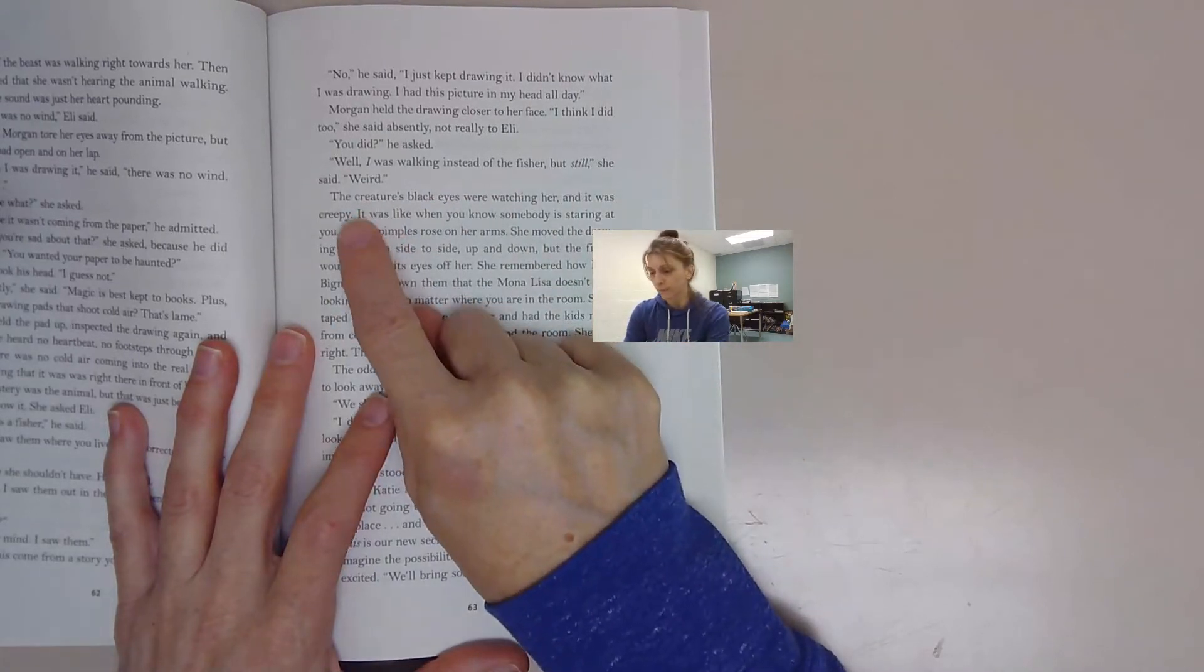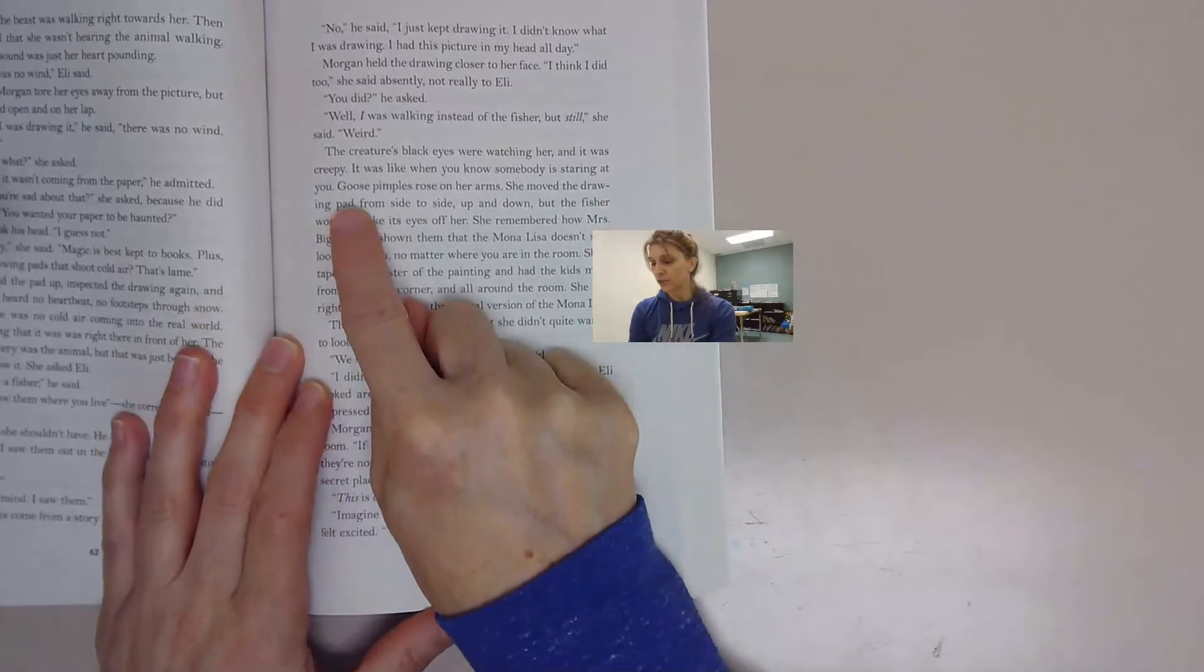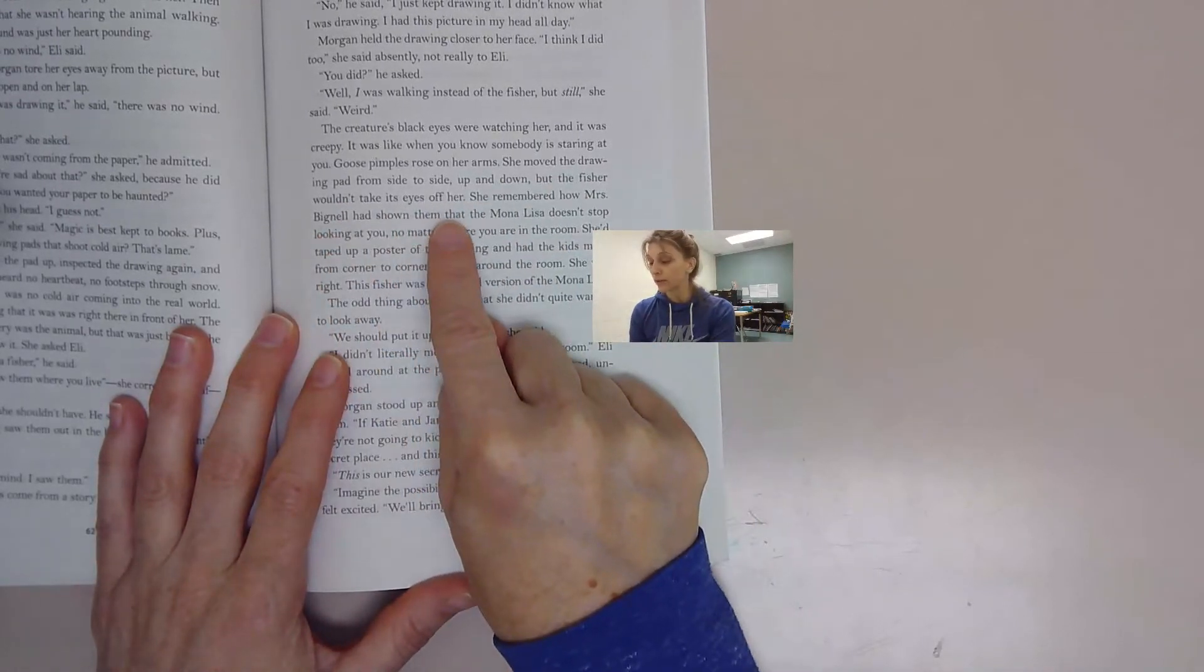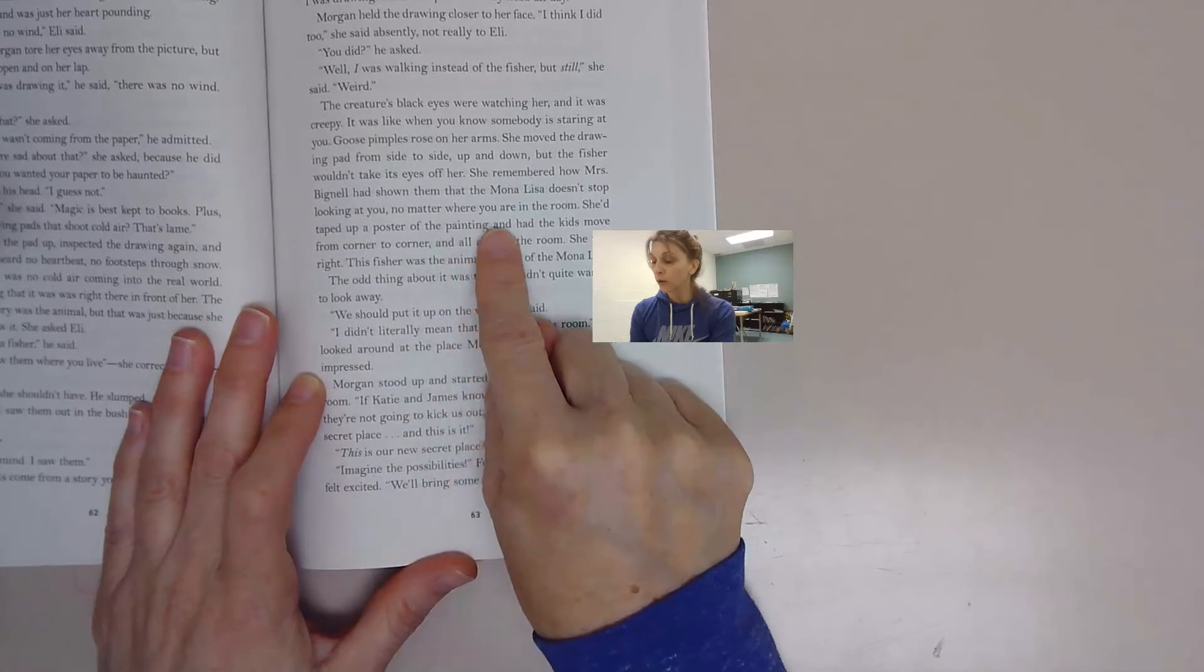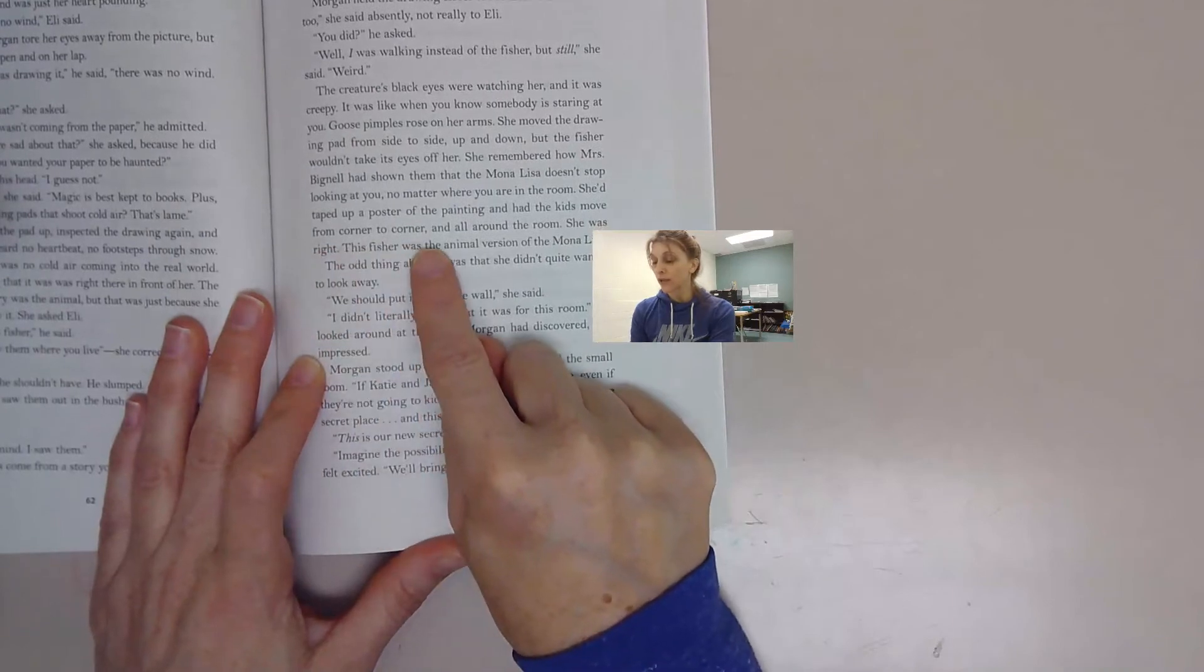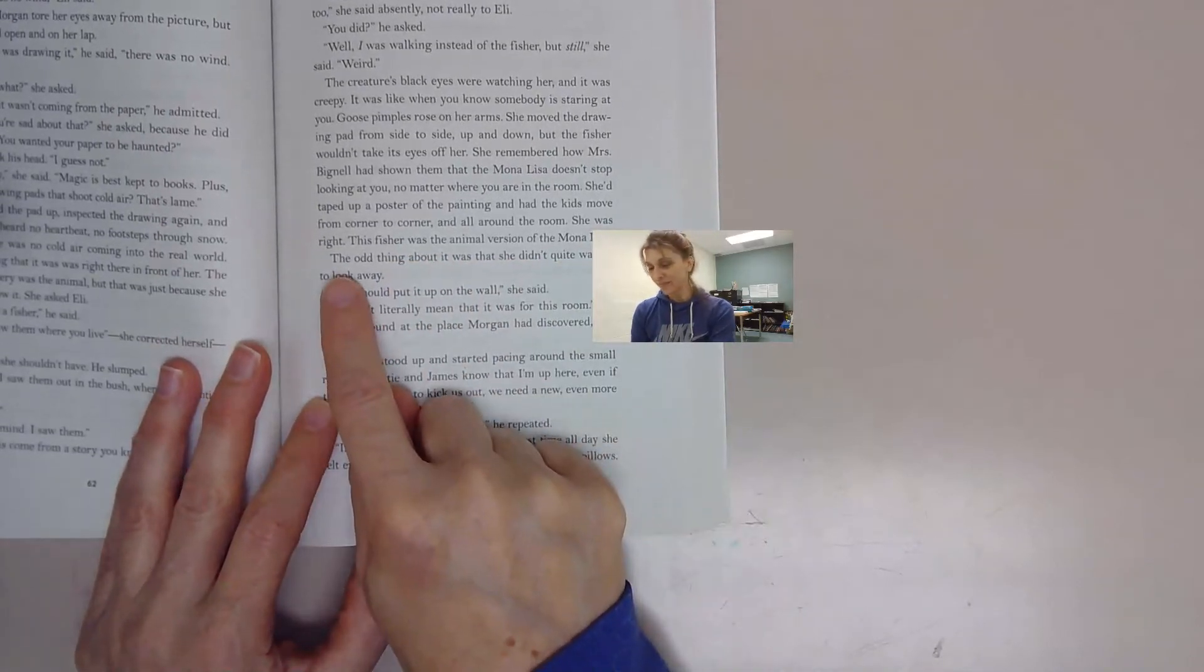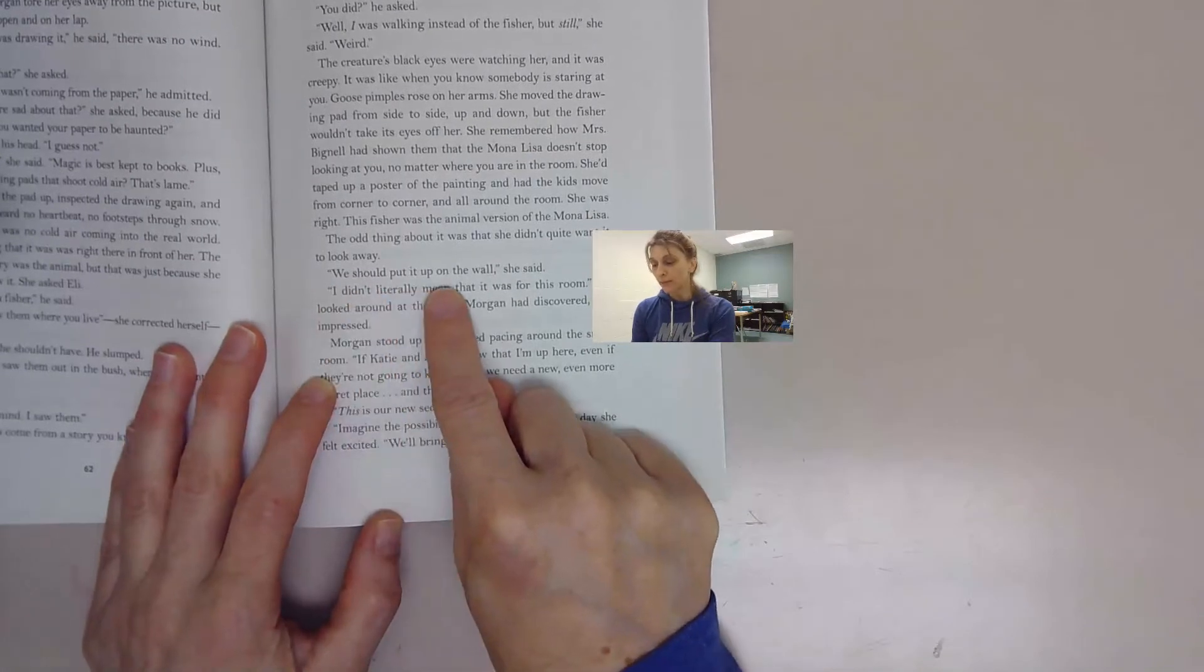Morgan held the drawing closer to her face. I think I did too, she said absently, not really to Eli. You did, he asked. Well I was walking instead of the fisher, but still, she said. Weird. The creature's black eyes were watching her and it was creepy. It was like when you know somebody is staring at you. Goose pimples rose on her arms. She moved the drawing pad from side to side, up and down, but the fisher wouldn't take its eyes off her. She remembered how Mrs. Bignell had shown them that the Mona Lisa doesn't stop looking at you no matter where you are in the room. She taped up a poster of the painting and had the kids move from corner to corner and all around the room. She was right. This fisher was the animal version of the Mona Lisa.